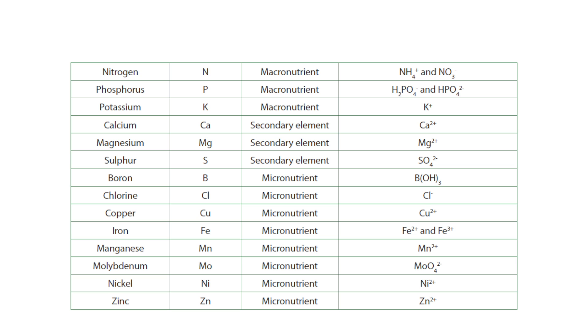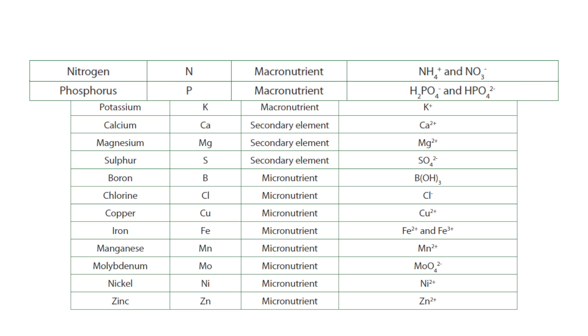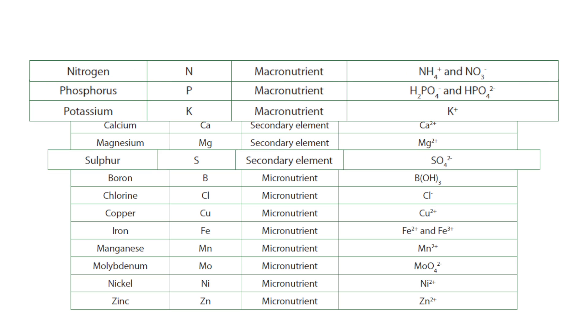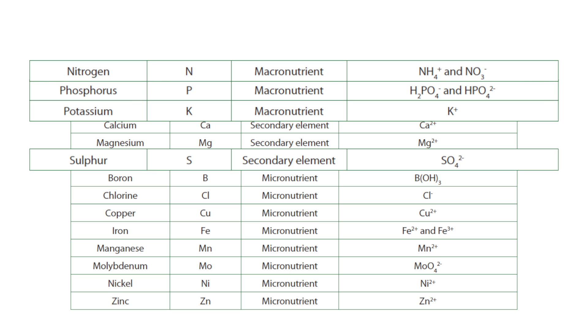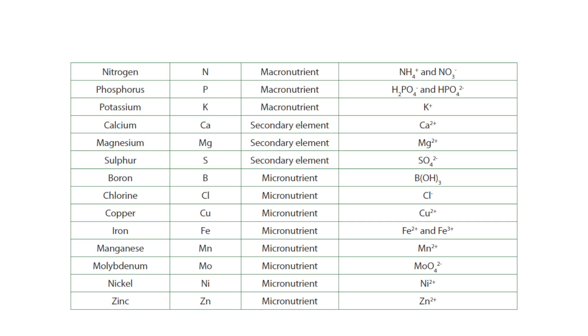However, the other 14 nutrients, for example nitrogen, phosphorus, potassium and sulfur, are derived mostly from soil and are therefore regarded as mineral nutrients.